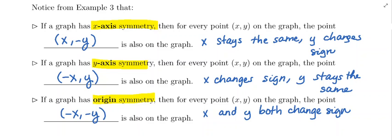For origin symmetry, if you take a point (x,y) on the graph, then the point (-x,-y) will also be on the graph, meaning both coordinates change sign.